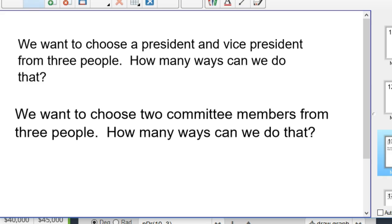So this top problem and the bottom problem are related. The top problem says we want to choose a president and a vice president from three people. How many ways can we do that? The bottom problem says we want to choose two committee members from three people. How many ways can we do that?